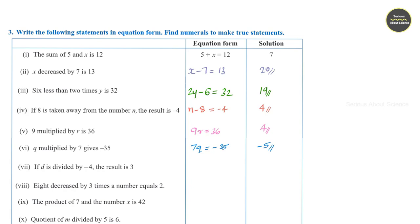Seventh question: if d is divided by minus 4, that is d by minus 4, the result is 3. Multiplying both sides by minus 4, d is equal to minus 12.